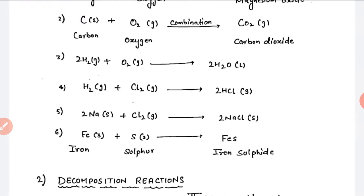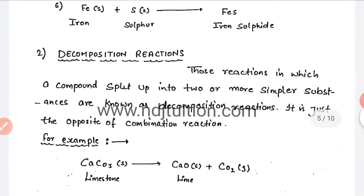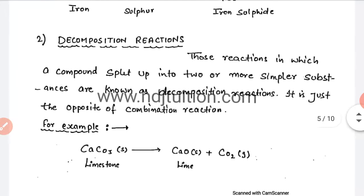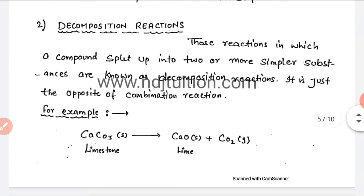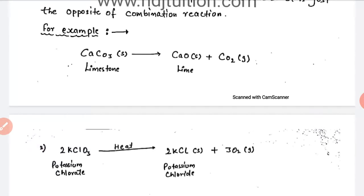Decomposition reactions are the opposite of combination reactions. In combination reactions, two reactants make one product, but in decomposition, one substance decomposes primarily into two or more substances. So decomposition reaction is the opposite of the combination reaction — a compound is split up into two or more substances.